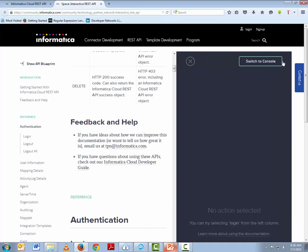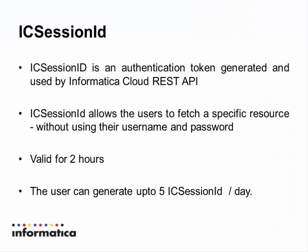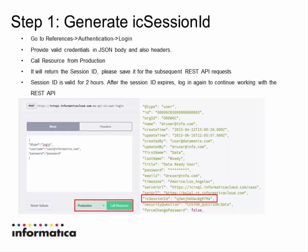For example, if you wish to test the login function, you have to click on that function first. The rightmost side gives you the console for trying the selected API call — you can consider it your playground, where you can provide different values of the arguments and see the result immediately. Working with REST API requires that you follow certain steps in a particular order. Every REST API call requires an IC Session ID, which is an authentication token generated by the Informatica Cloud REST API. It is generated by providing valid user credentials in the login REST API request. This ID is valid for 2 hours, and Informatica Cloud REST API permits a user to generate 5 IC Session IDs per day. Once the IC Session ID expires, you can regenerate a new one using the login REST API request.